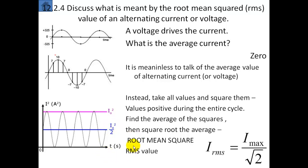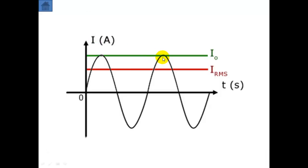Basically, you take the maximum current and you square it and you divide by 2, and then you take the square root — or just take I_max and divide by √2. So the RMS value for the current will be equal to the peak value, the max value, divided by √2. The peak value for the current — the average will be 0 — but we find the RMS value, which is I₀, or I_max, I_peak, divided by √2, or basically 71% of that value.